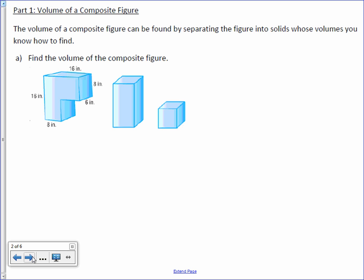The volume of a composite figure can be found by separating the figure into solids whose volumes you know how to find. Find the volume of the composite figure. This figure can be broken down into two rectangular prisms.